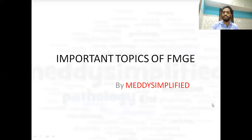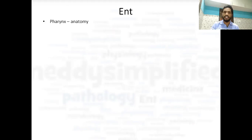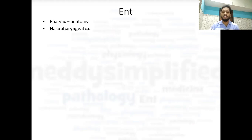First we will start with ENT. In ENT we will start with the pharynx, and the anatomy of the pharynx is very important, as well as the very important topic of nasopharyngeal carcinoma. After that, nasopharyngeal angiofibroma — a similar kind of question has been asked from nasopharyngeal angiofibroma in the FMG exam since four or five papers. So you should do it too.